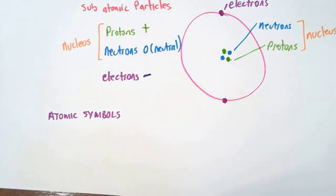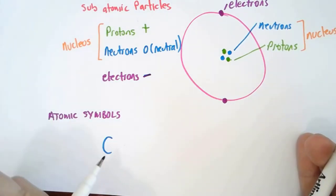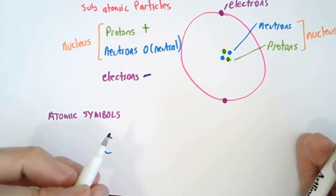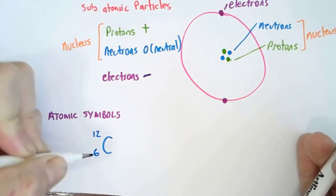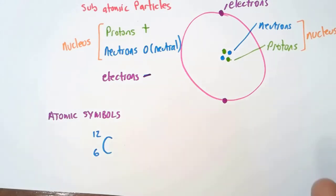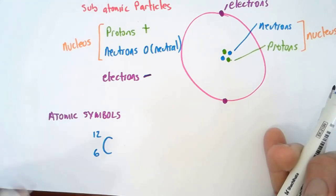For example, let's do carbon. So that's the symbol for carbon, and then we've got these two numbers here: 12 and 6. Carbon has 6 protons. So this number here tells us the number of protons. The number of protons determines the type of atom.